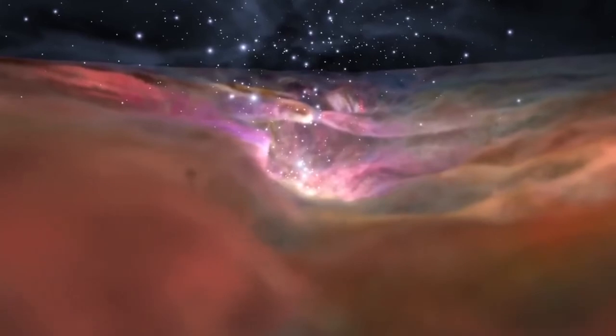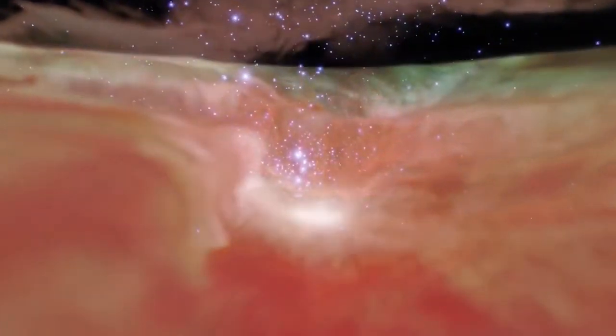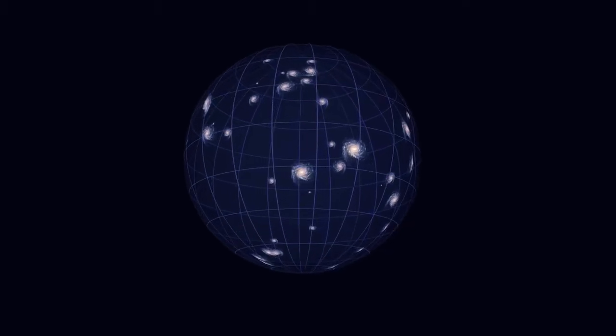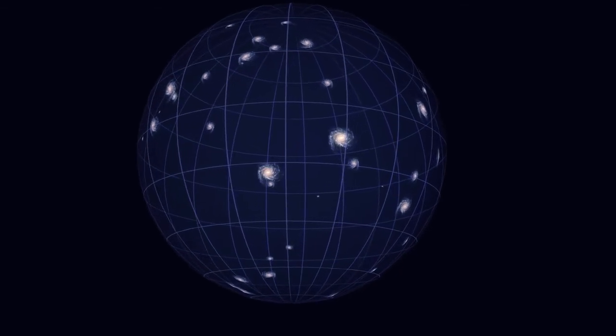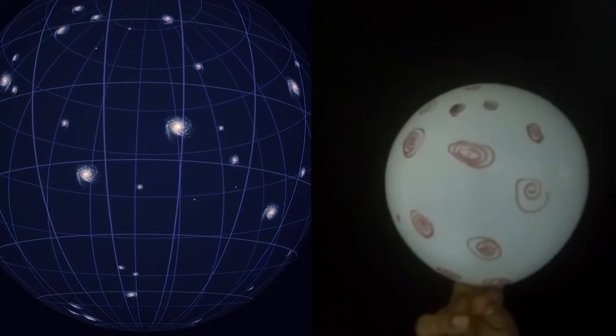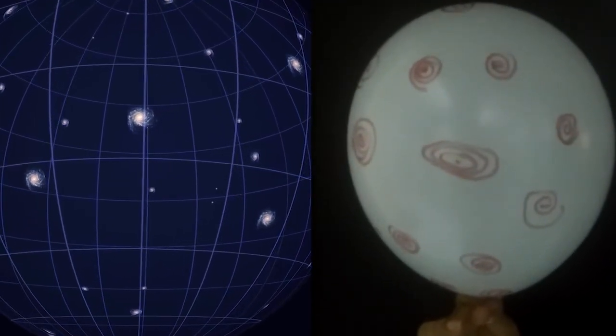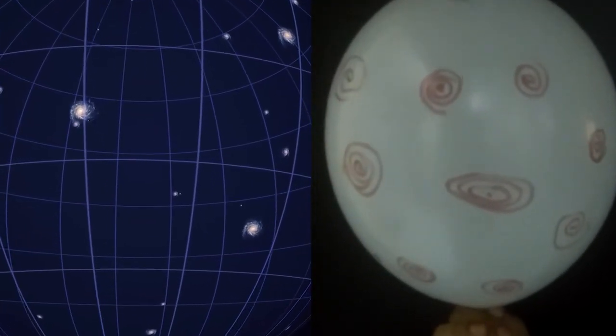To answer the second question, does this violate the theory of general relativity? No, it doesn't, because the galaxies and other stuff are not moving through space faster than the speed of light. We can think of it again as the balloon example. The galaxies are actually stationary, they aren't moving. The balloon itself, which is space itself, is expanding. That's why it doesn't violate the law of general relativity or the special theory of relativity.